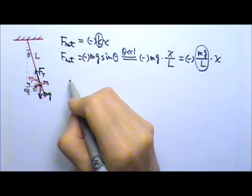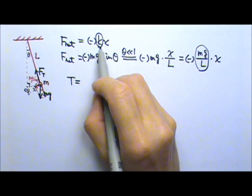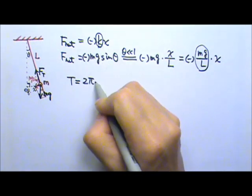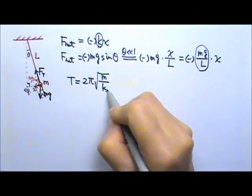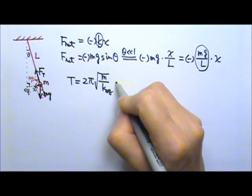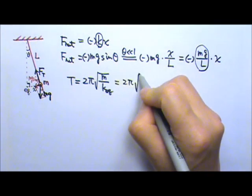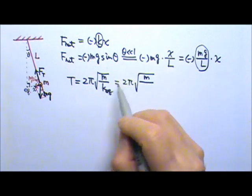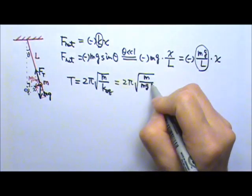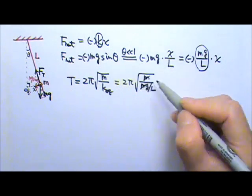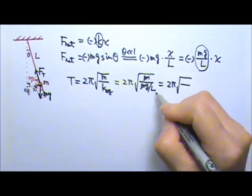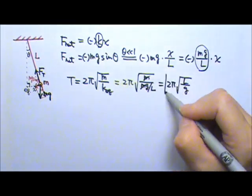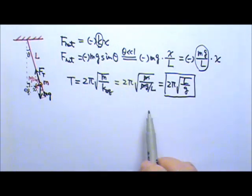We already know that the period of a spring-mass simple harmonic oscillator is 2π times the square root of m over k. For the pendulum, the equivalent k is mg over L. So the period is 2π times the square root of m divided by mg over L. The mass m cancels, and we simplify to get T equals 2π times the square root of L over g. This is the equation for the period of a simple pendulum, and you should memorize this.